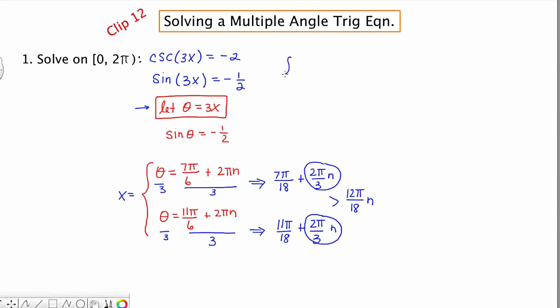The first scenario I'm going to look at is when n is 0, which basically knocks this out, and we're left with 7 pi over 18 and 11 pi over 18. That's certainly in the initial interval that I'm supposed to be looking at.